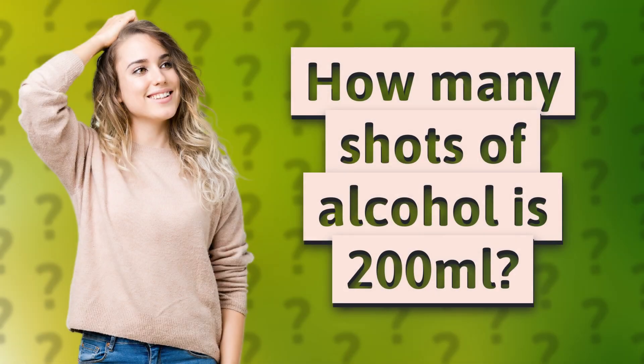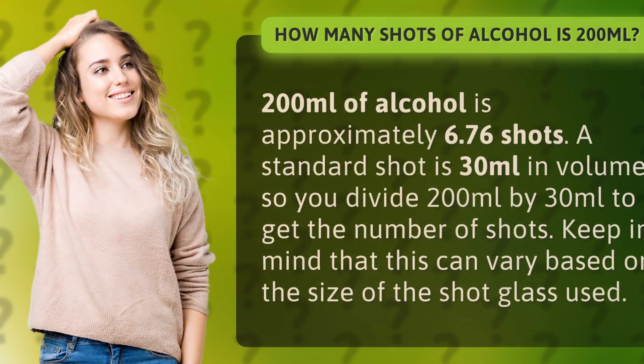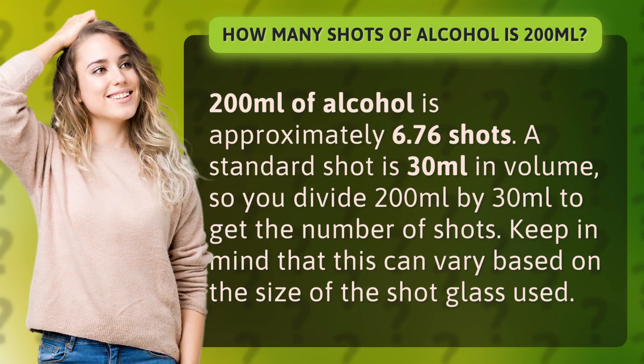How many shots of alcohol is 200 milliliters? 200 milliliters of alcohol is approximately 6.76 shots. A standard shot is 30 milliliters in volume, so you divide 200 milliliters by 30 milliliters to get the number of shots. Keep in mind that this can vary based on the size of the shot glass used.